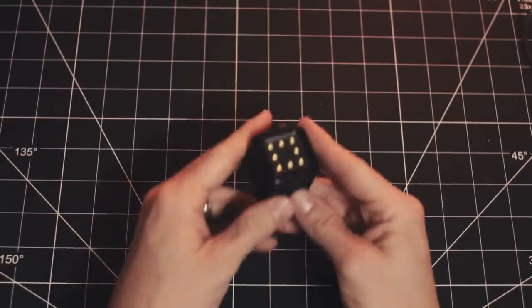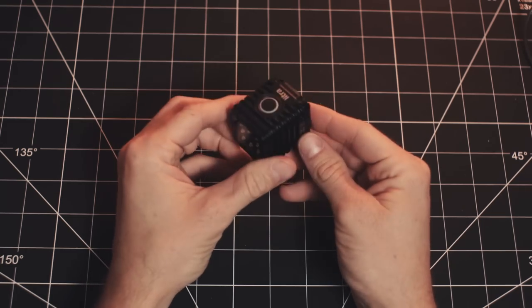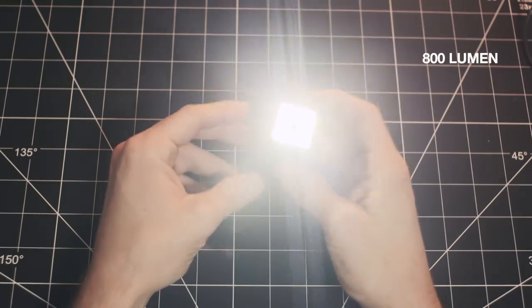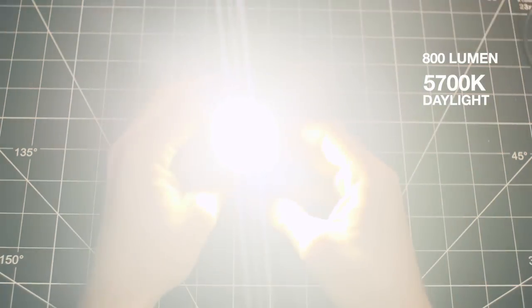This is the Litra torch. A 1.5 by 1.5 inch aluminum cube light that can deliver up to 800 lumens of continuous high quality light.